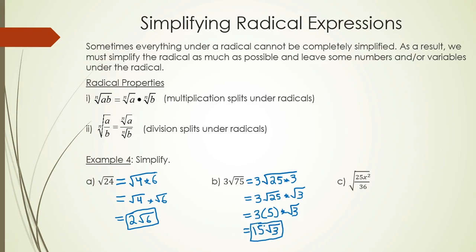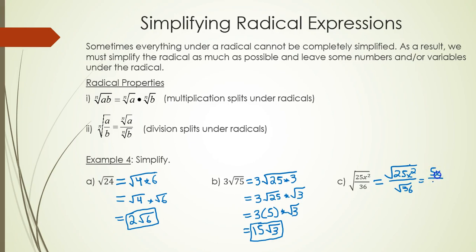This is all about finding what perfect square divides evenly into the number under the radical. Part C involves division: the square root of a fraction means you take the square root of the top over the square root of the bottom. So the square root of 25x² is 5x, and the square root of 36 is 6.